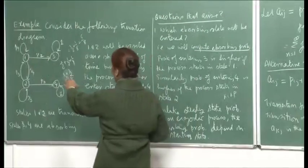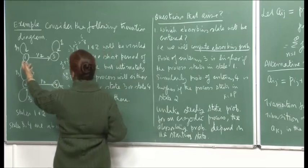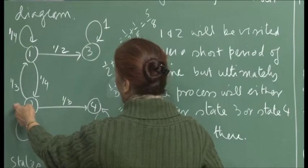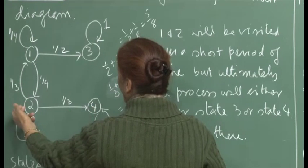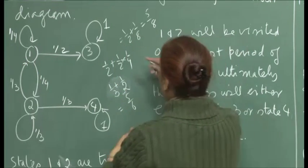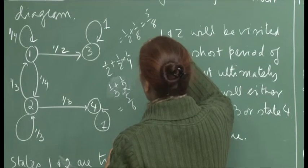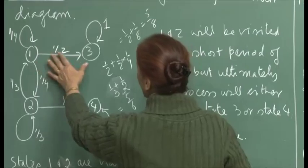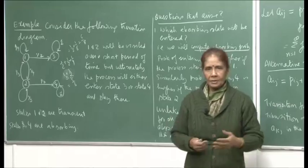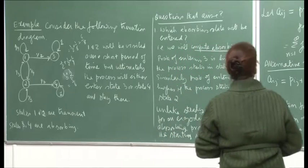We will ultimately compute the probabilities and show that the absorbing probability when you are in state 1 to 3 is higher than when you are in state 2. Similarly for 4, it will be higher when you are in 2 than when you are in 1. If I take 4 transitions, then I can show that the numbers when you are in state 1 transitioning to 3 will have a higher value than transitioning from 2 to 3.